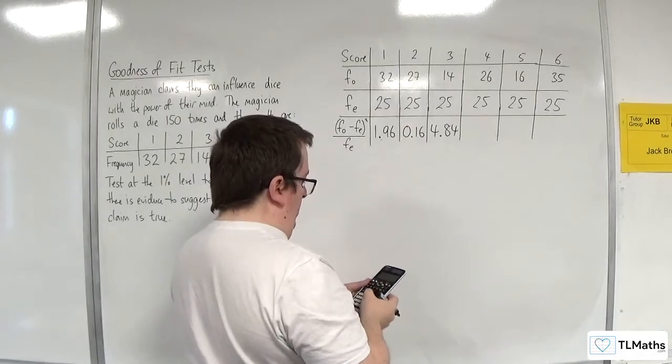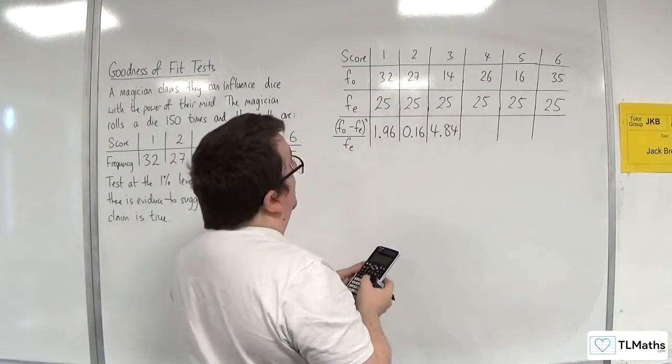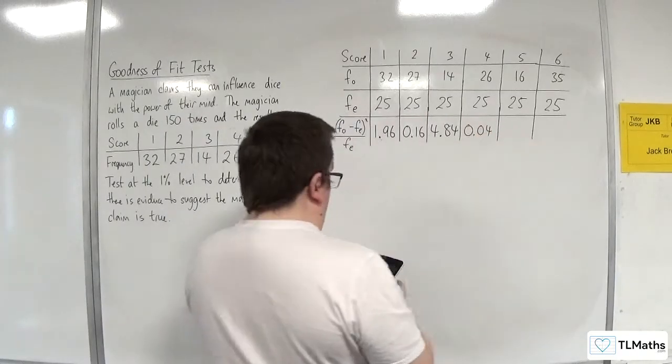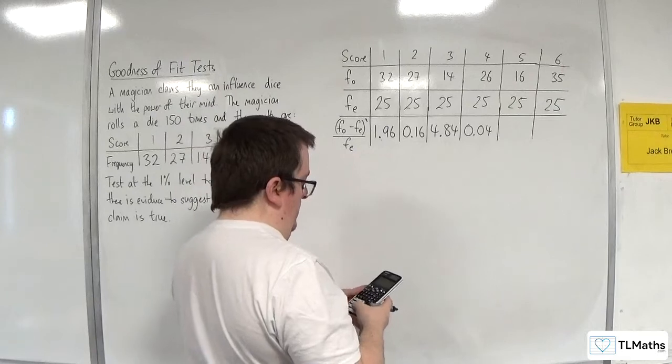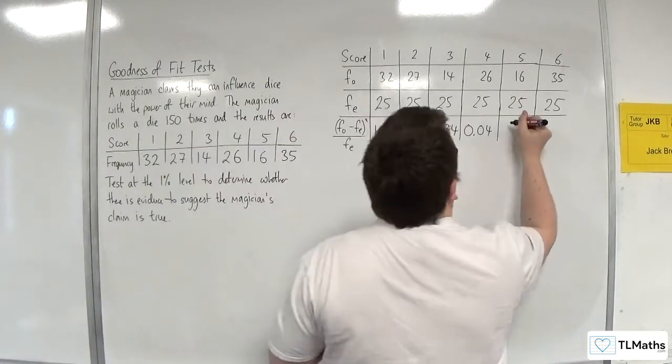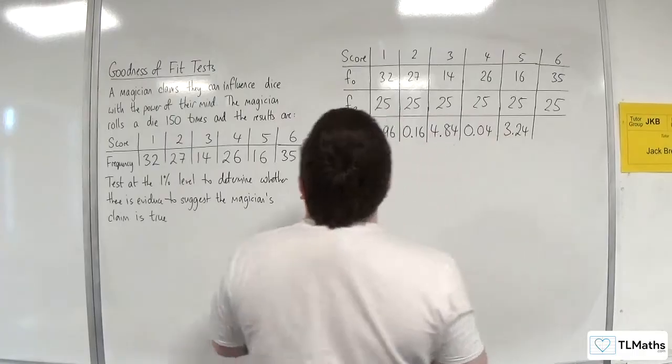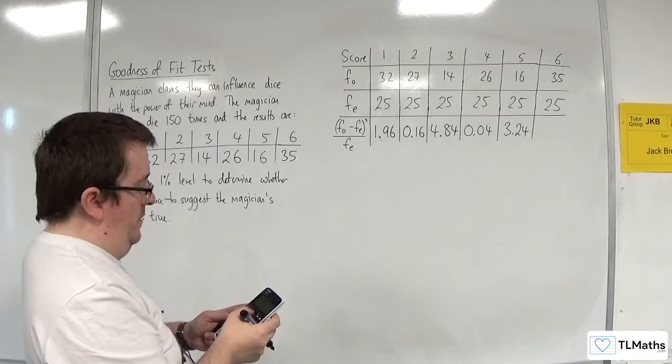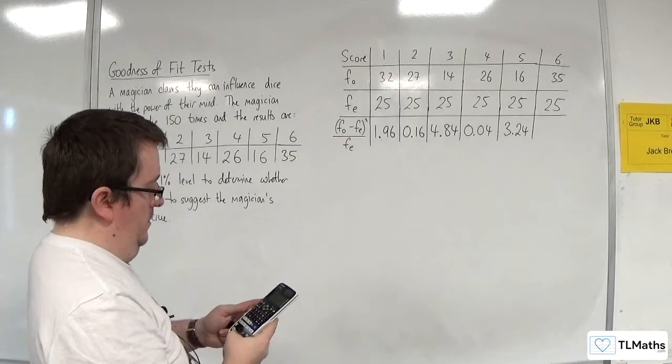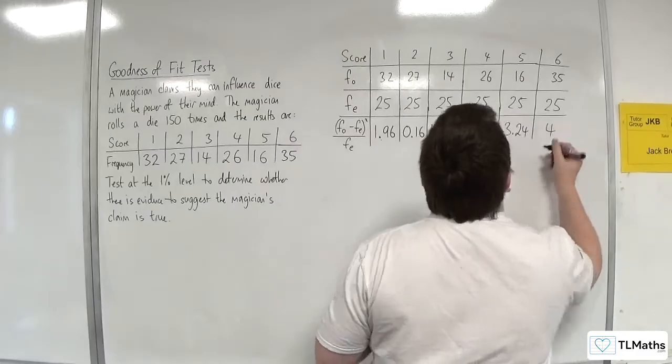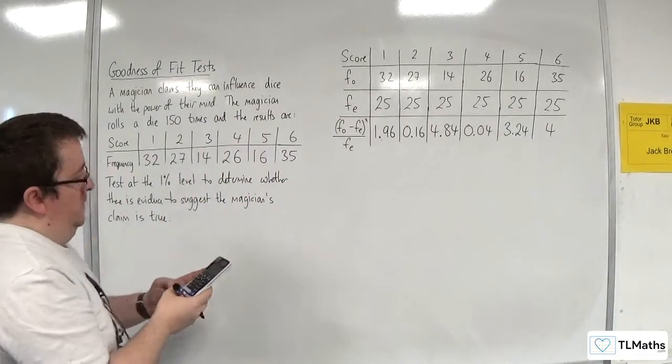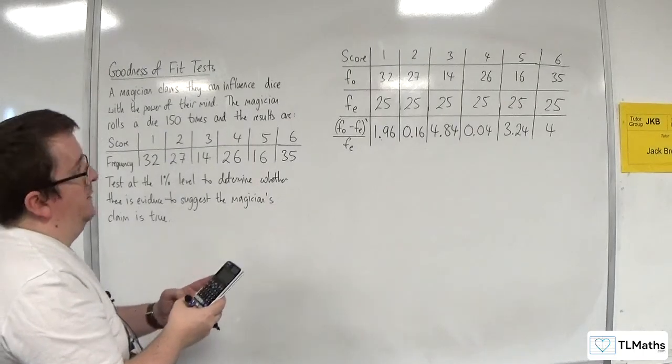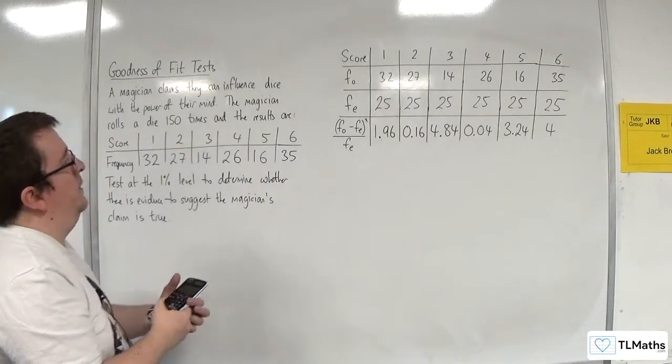All right, then to 26. 0.04. And to 16. So, 3.24. And then to 35, which is 4. Okay. Right. Just double-checking, everything's all right. Yeah. Okay.